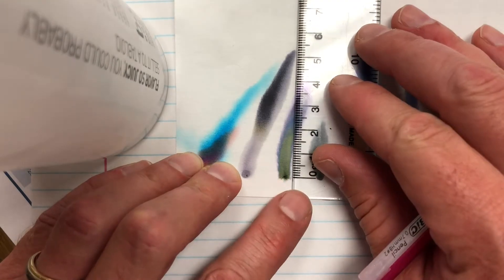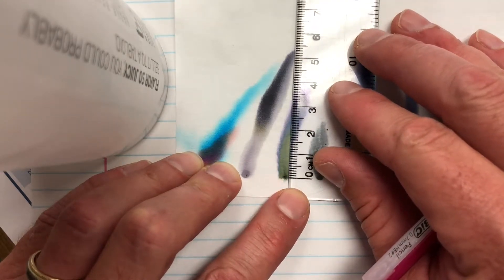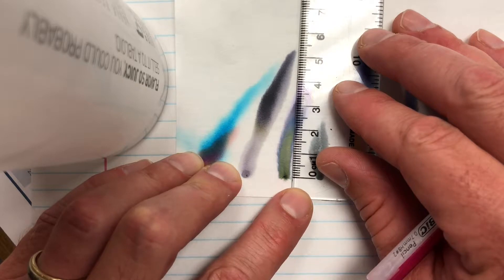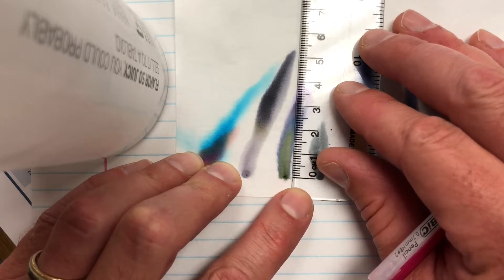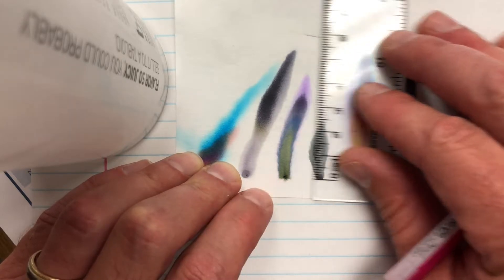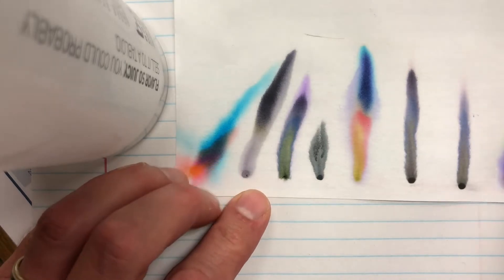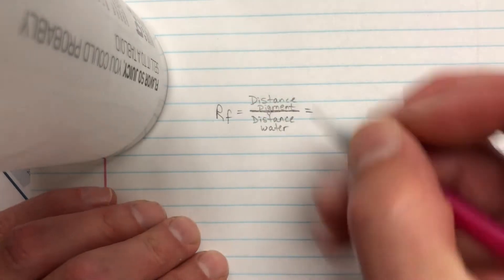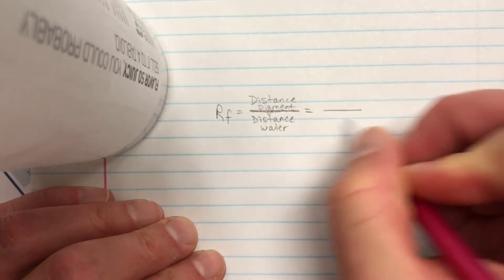So if I take my ruler and I look, I'm right about maybe at 61, 59, 58, so with this I will actually go with, I'm going to go with 61 on this one. So the distance that the water traveled was 61 millimeters.